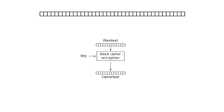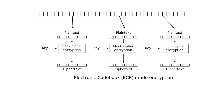The most naive way to handle a bigger plaintext is to use ECB — the most simple mode of operation you can imagine. You split your plaintext into blocks, and if it's not a multiple of 64 bits, you pad it. So here we have 3 times 64-bit plaintext, split into 3 blocks, and we encrypt them separately with the same key to get 3 separate ciphertexts. But ECB is very bad because if you encrypt the same thing twice, you will get the same encryption twice.